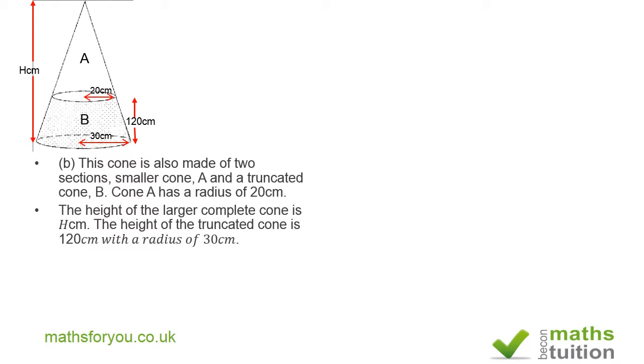The height of the larger complete cone is H centimeters. The height of the truncated cone is 120 centimeters with a radius of 30 centimeters. What is the height of the smaller cone A?